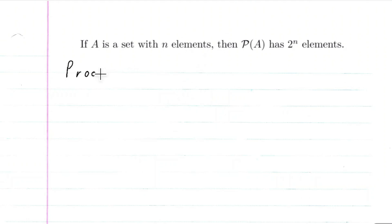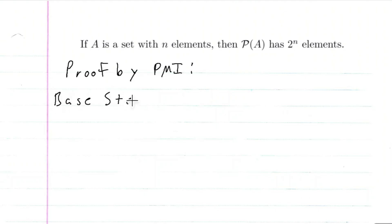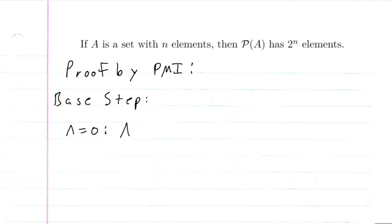So proof by PMI. With the principle of mathematical induction, we need to first do a base step, to illustrate that this works for the first term, and several other terms after, to give us an idea of how to do the inductive step. So the first one we'll do is where A has zero elements — we'll let N equal zero. This means that A sub zero, that's what we'll call it, is the empty set.